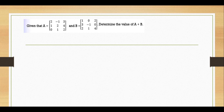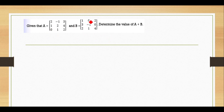Given that A equals one matrix and B equals another, determine the value of A plus B. Before we do the addition, we have to make sure the order of matrix A must be the same as the order of matrix B. The order of matrix A here is 3 times 3, and the order of matrix B is also 3 times 3. They are equal, so we can proceed.